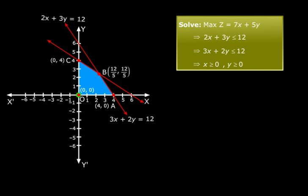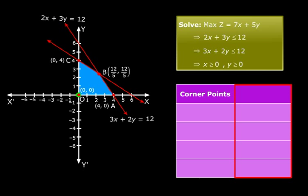Let me write them in a table. Now in this column, we will find the values of z at all these points. z equals 7x plus 5y.